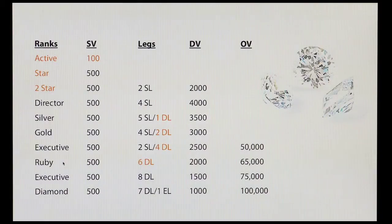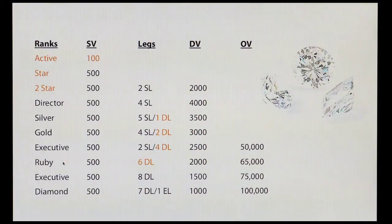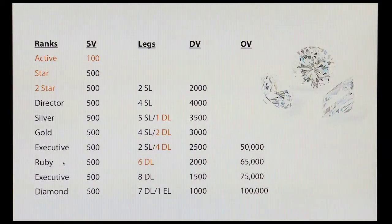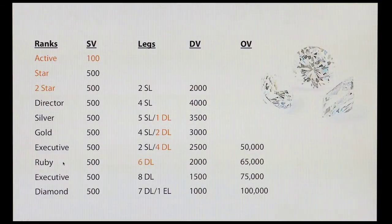I've highlighted some of the changes we are introducing in red. First, we're introducing active rank — active rank is when you hit 100 sales volume. You're no longer considered active at 500; you're active when you do $100 of volume, meaning you're involved and actively doing something in your business. Star is moved to 500 sales volume — what we previously called active at 500, we're now calling star. And we're bringing back the two-star rank. Two-star has the same qualifications as today's star; we're just going to call it two-star.